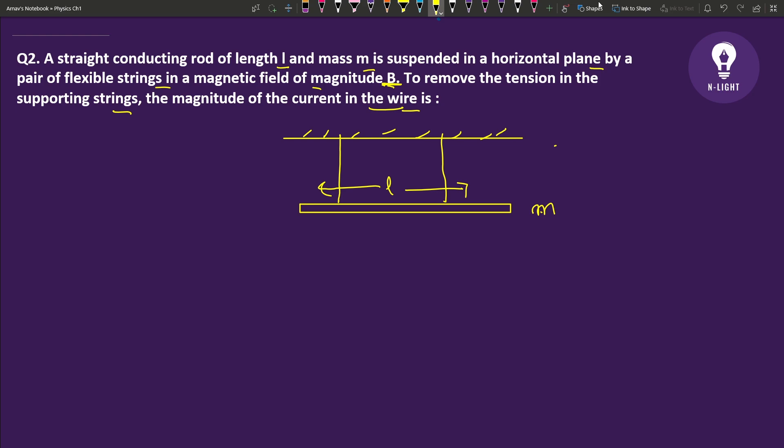It is a magnetic field. We know that a current carrying wire in a magnetic field experiences force. This is the force, which is the magnetic force ILB.